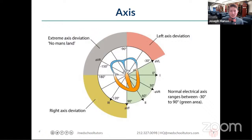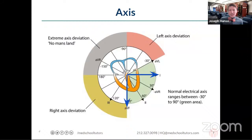The way we assess axis is by looking at individual leads. Each lead represents electrical activity going in one cardinal direction. The most important leads for determining axis are lead one, which points directly to the left, and lead AVF, which points straight down. An upward deflection of the QRS complex represents electrical activity pointing towards that lead. If I see an upward QRS in lead one, electricity is going to the left. If electricity points to the patient's right, you'd see a downwardly deflected or negative QRS in lead one.